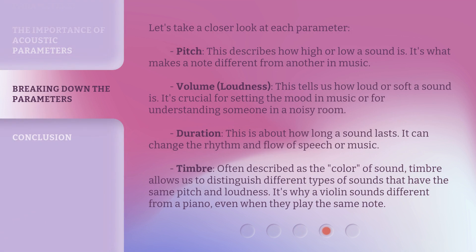Let's take a closer look at each parameter. Pitch describes how high or low a sound is — it's what makes one note different from another in music. Volume and loudness tell us how loud or soft a sound is, crucial for setting the mood in music or understanding someone in a noisy room. Duration is about how long the sound lasts, and it can change the rhythm and flow of speech or music.